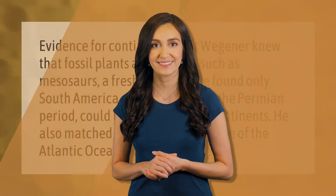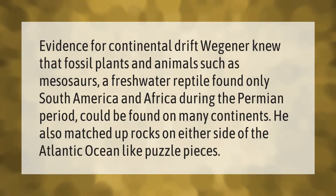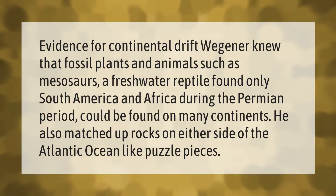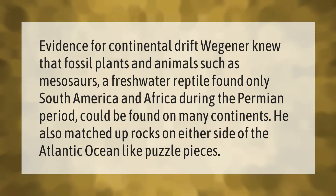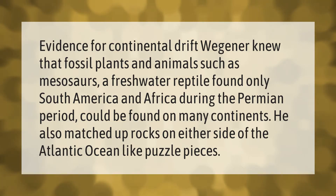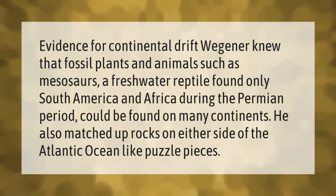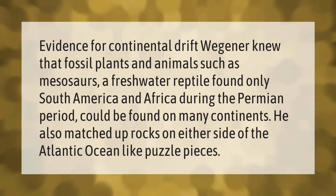Evidence for continental drift: Wegener knew that fossil plants and animals, such as mesasaurs — a freshwater reptile found only in South America and Africa during the Permian period — could be found on many continents. He also matched up rocks on either side of the Atlantic Ocean like puzzle pieces.